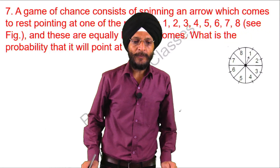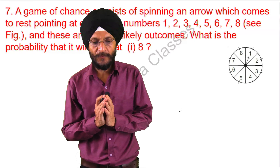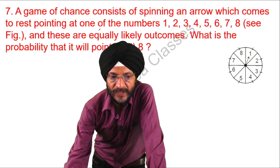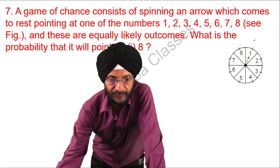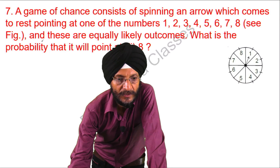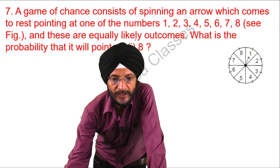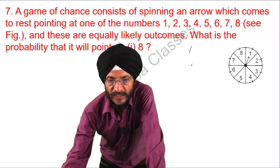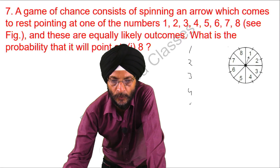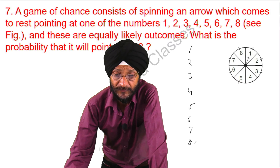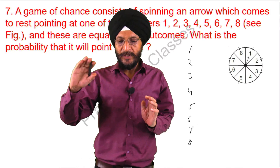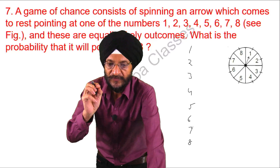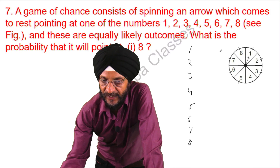The next question: a game of chance consists of spinning an arrow which comes to rest pointing at one of the numbers 1, 2, 3, 4, 5, 6, 7, 8, and these are equally likely outcomes. What is the probability that it will point at 8? When we spin it, there is a possibility that we will get the arrow pointing at 8 only one time.